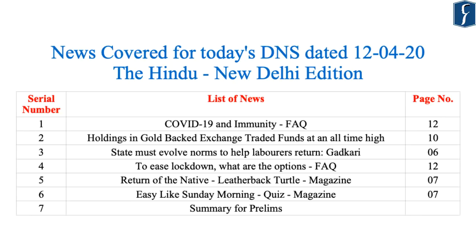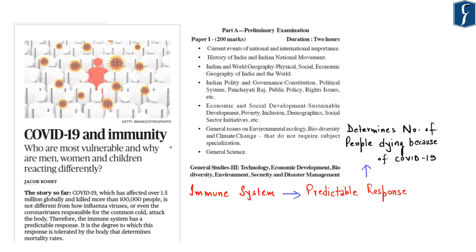Let's move on to our daily news discussion for The Hindu newspaper dated 12th April 2020. The first news appears on page number 12 in the FAQ section: 'COVID-19 and immunity — who are most vulnerable and why are men, women and children reacting differently?' This article explains how our immune system reacts when invaded by any foreign body, including coronavirus, and highlights our predictable immune responses in fighting COVID-19.